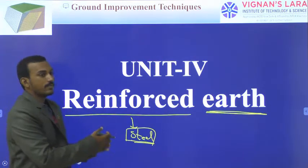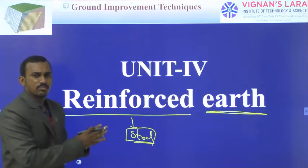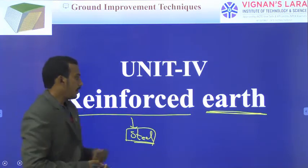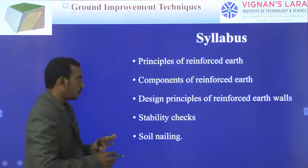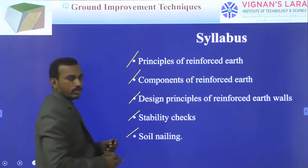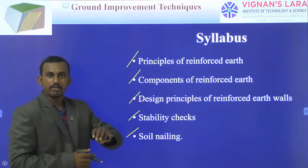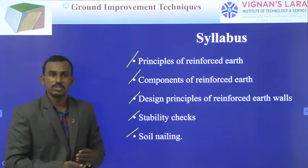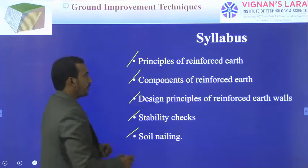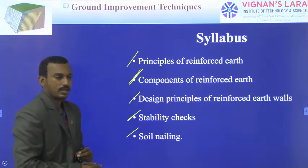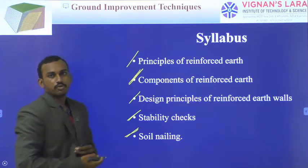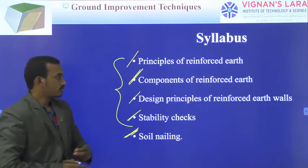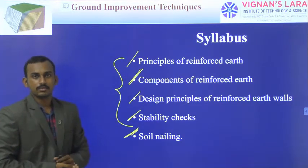In this unit, we will discuss what various elements we can use to support the earth, mainly retaining walls. We need to provide support to the earth to prevent it from falling to the other side. This is a very easy unit — it contains only five topics. If you look at previous question papers, one question must be there from these five topics. The second topic on stability checks is very easy, with only two checks. Soil nailing is somewhat different compared to the other four topics.